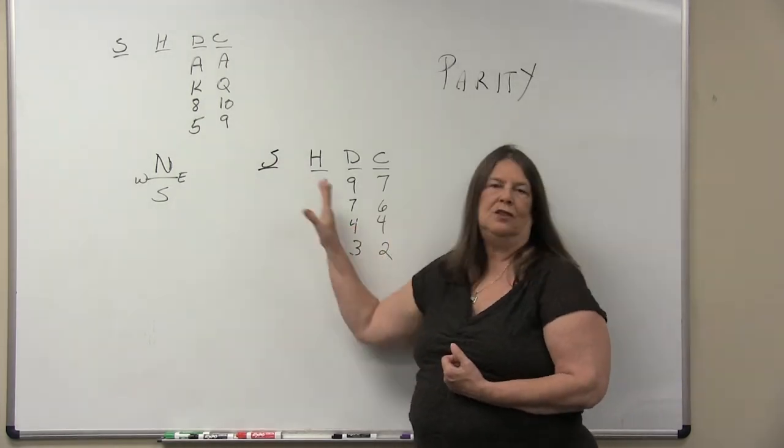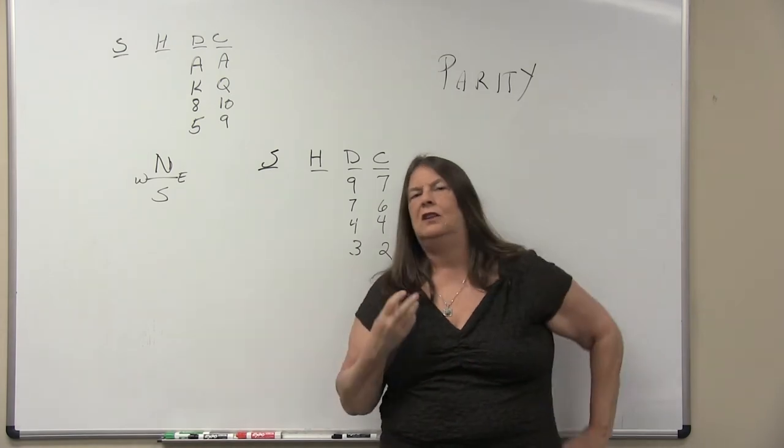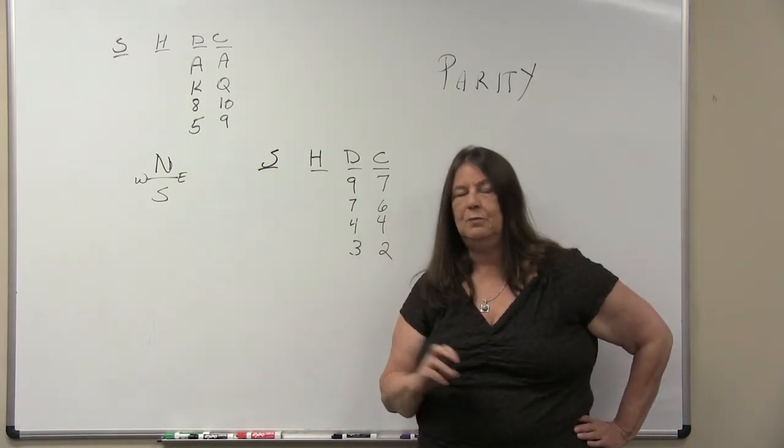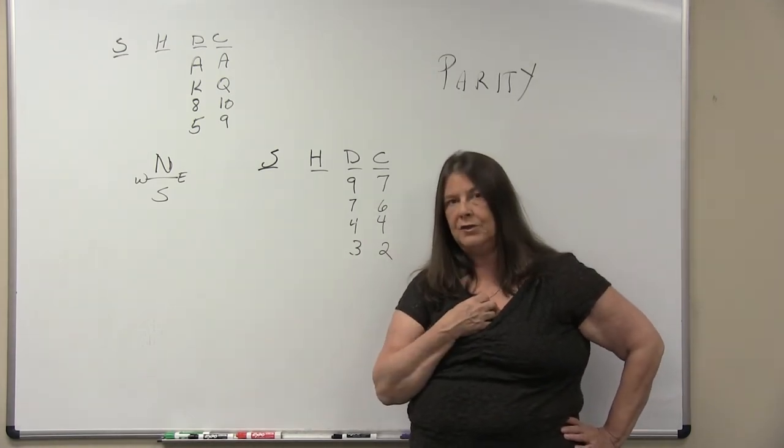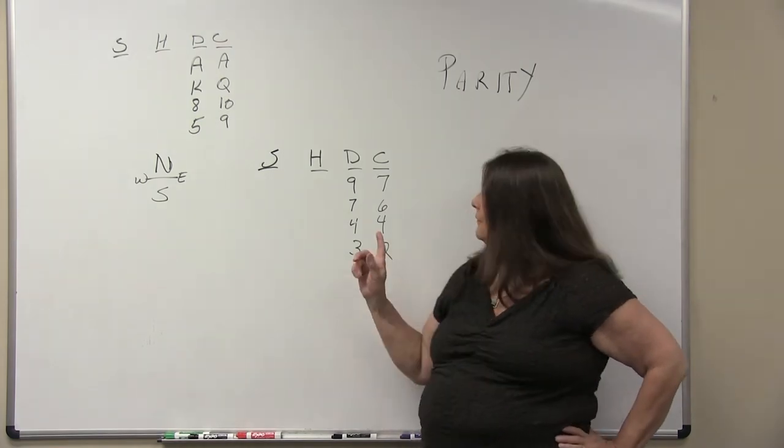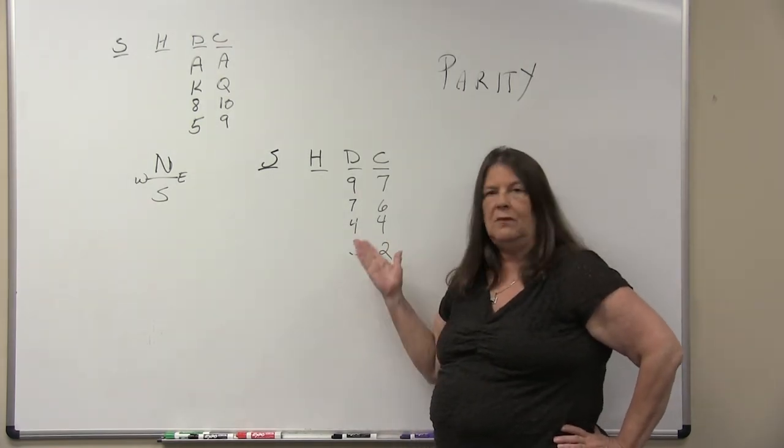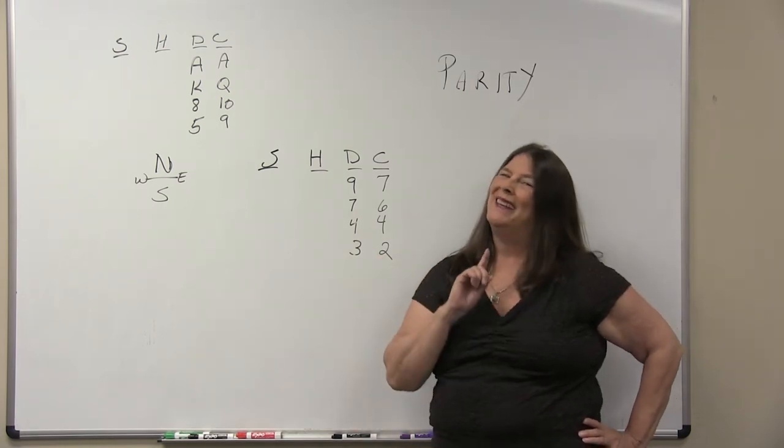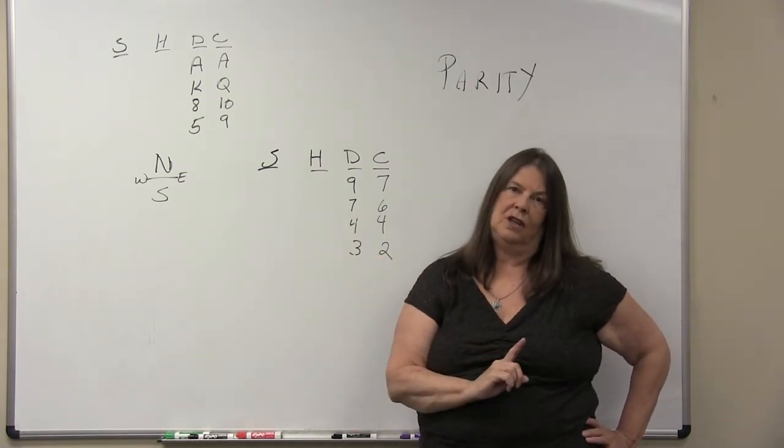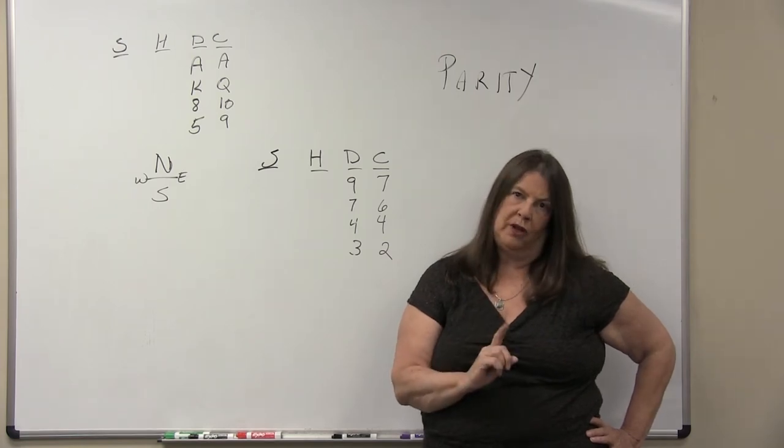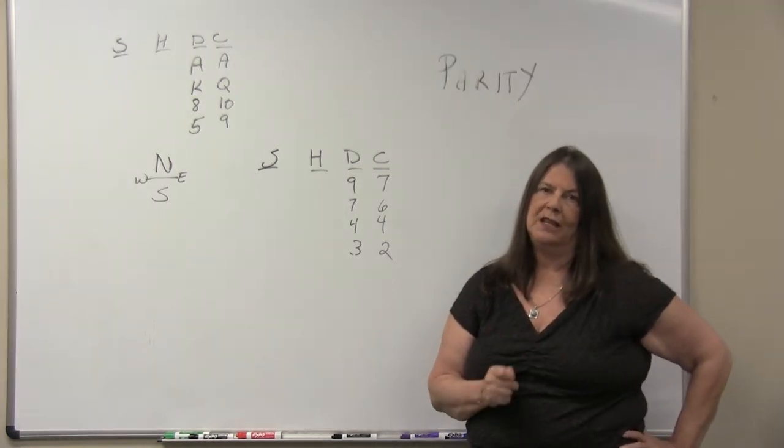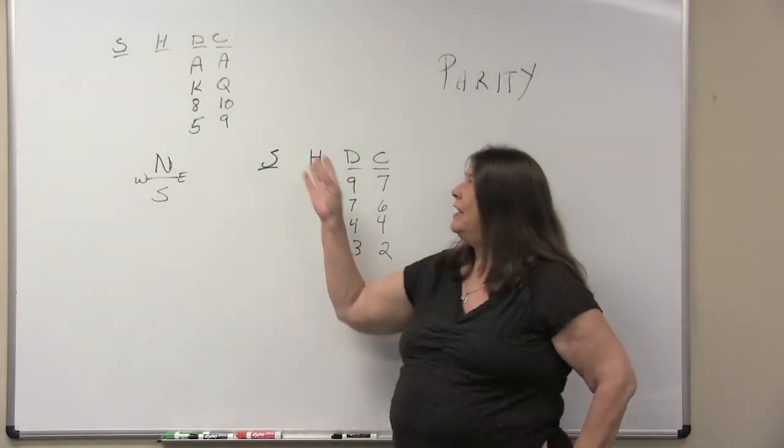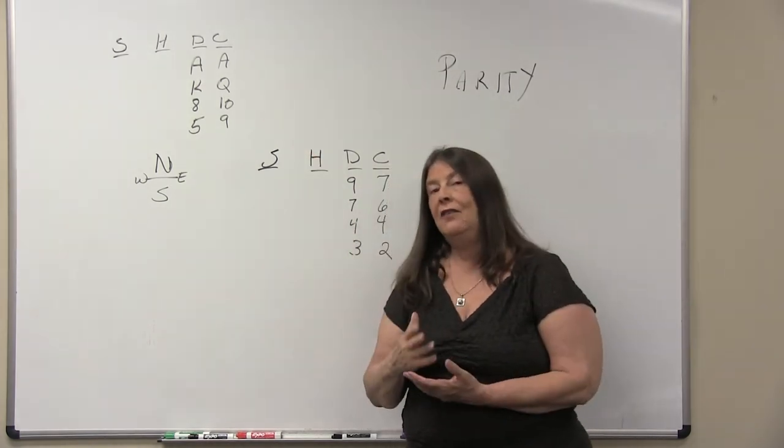So what does this mean in terms of playing the hand? It means when declarer starts to play a long suit or play any suit that I cannot follow suit, it's fine if I discard clubs. I can't do anything with those clubs anyway. They will never win a trick. But what I can't do is discard the diamond because I'm the only one that can keep the eight of diamonds from taking a trick. Now it's pretty easy when you're looking at dummy to see how that works.